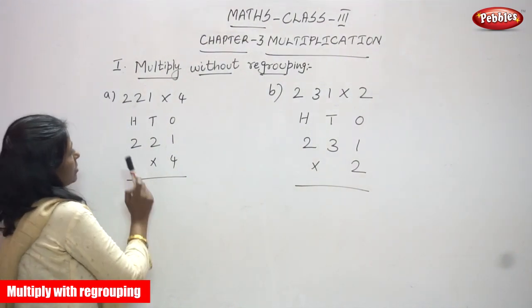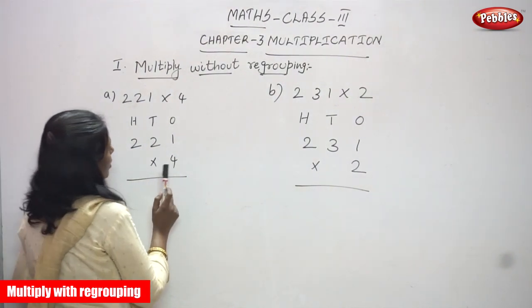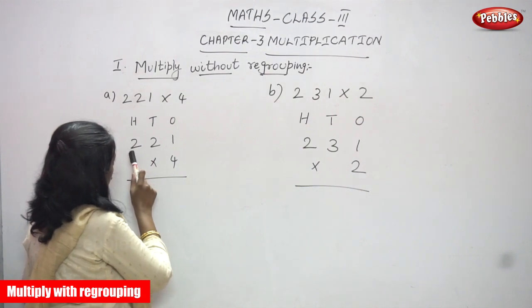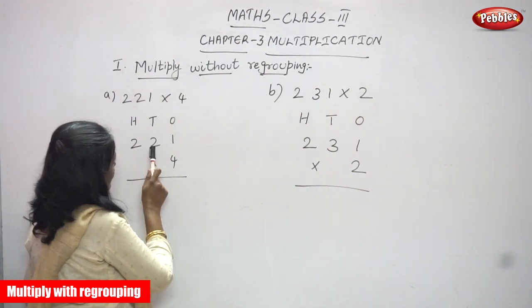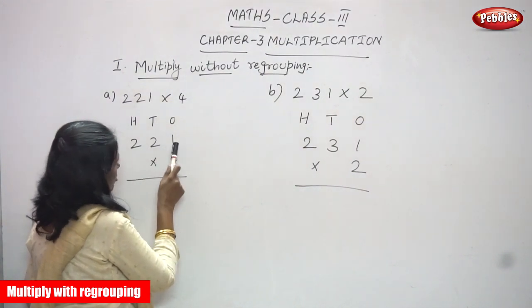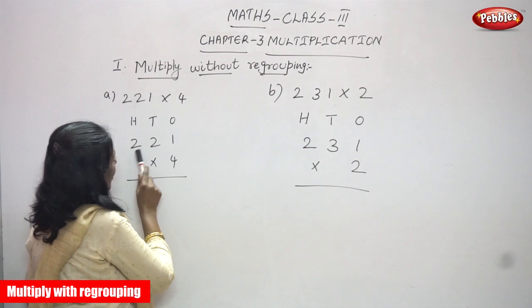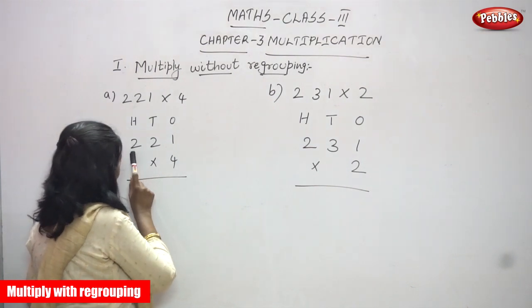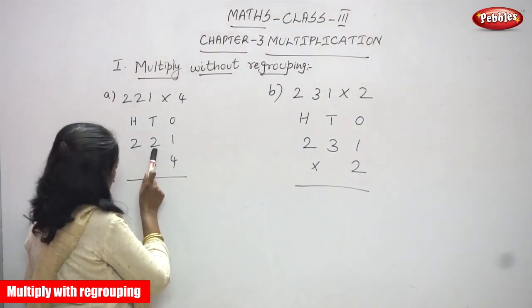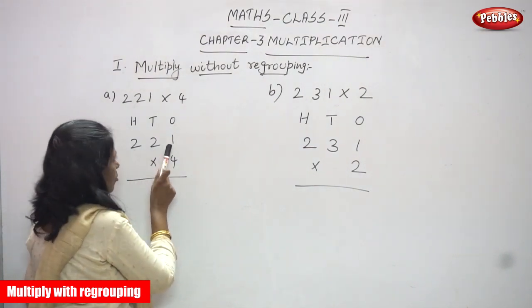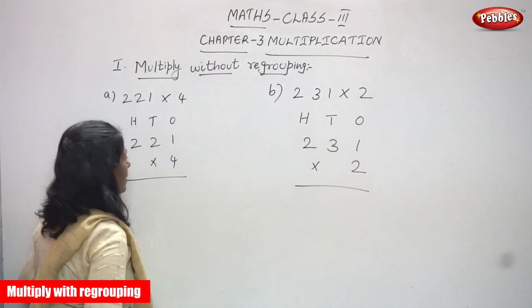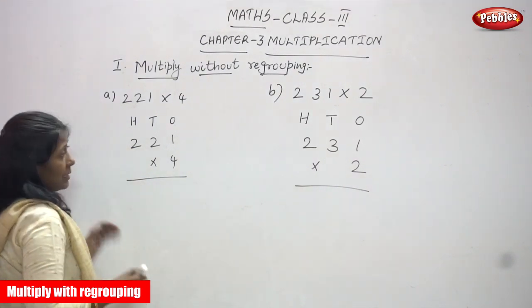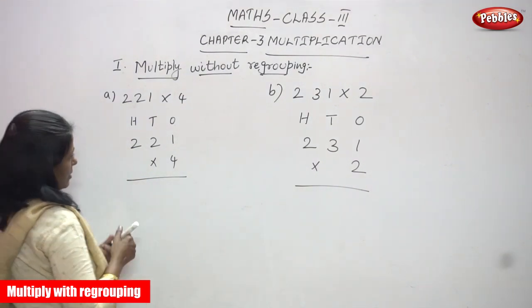Ones, tens, hundreds. The number is two hundreds, two tens, and one ones — that is two hundred and twenty one. This is going to be multiplied by four, which is a single digit number. Let's start the multiplication.